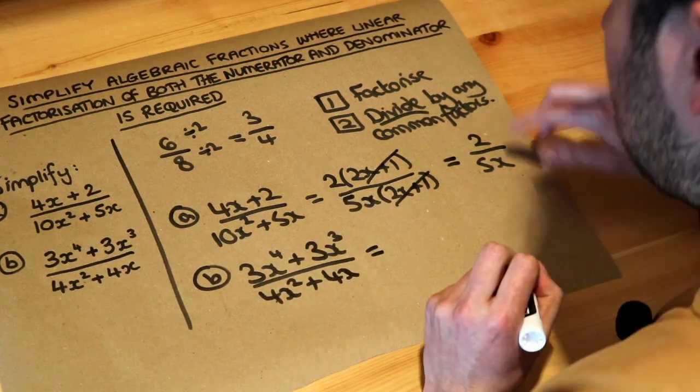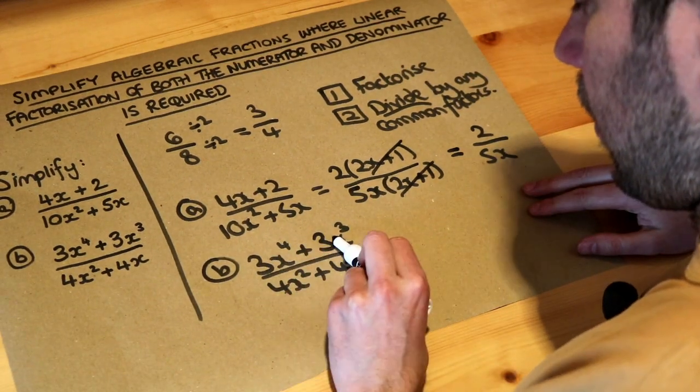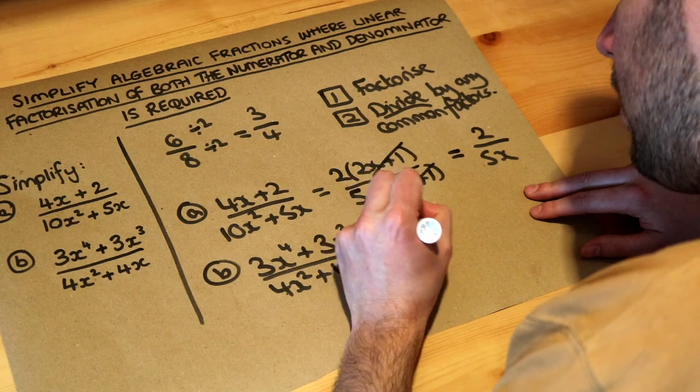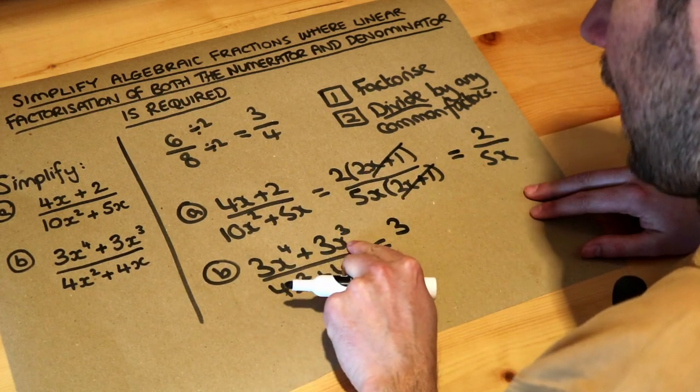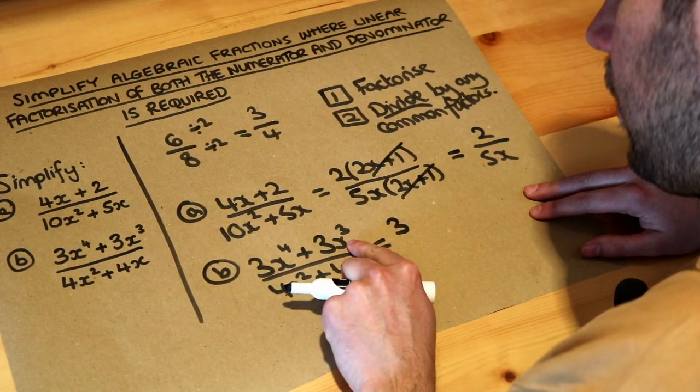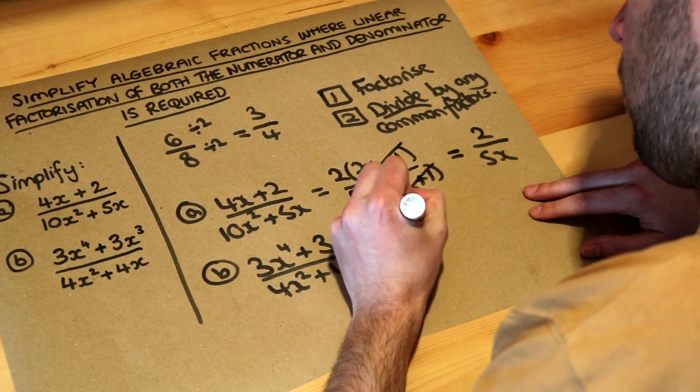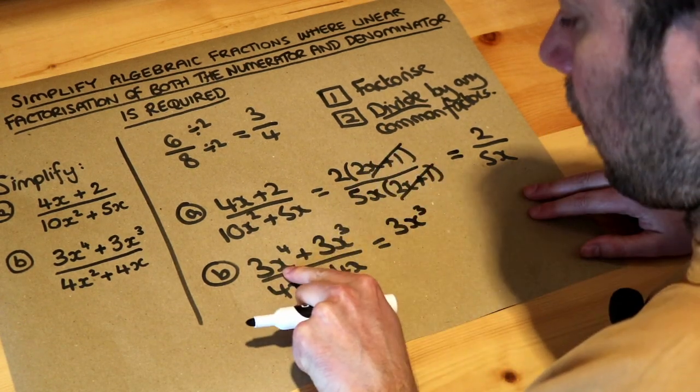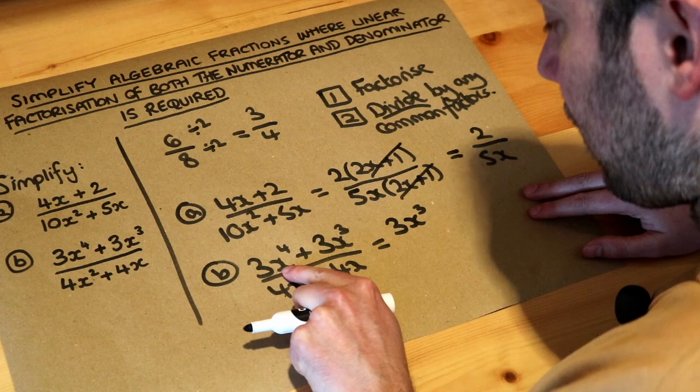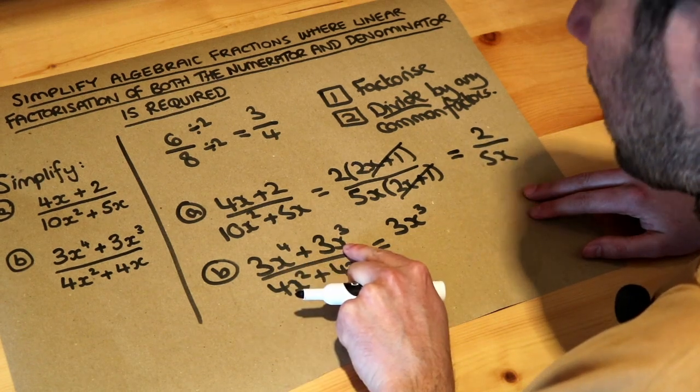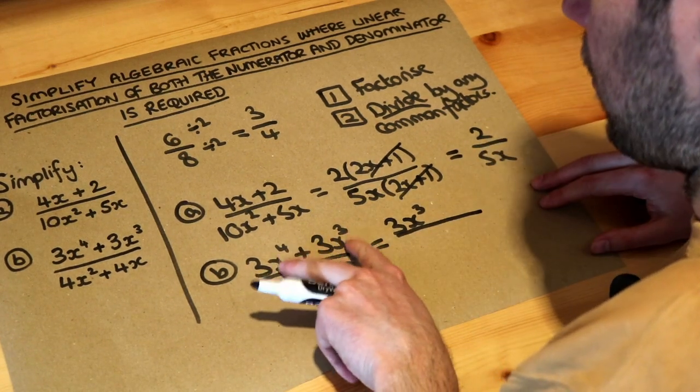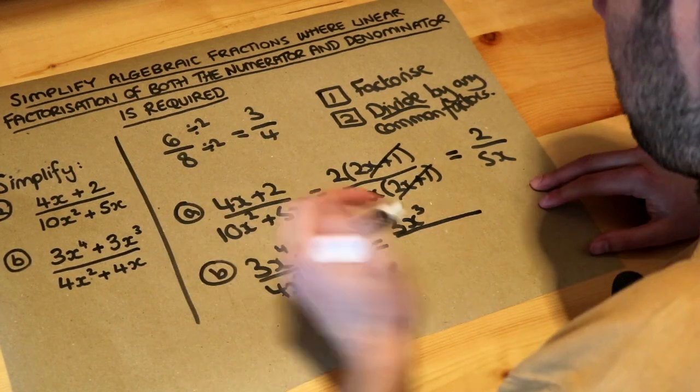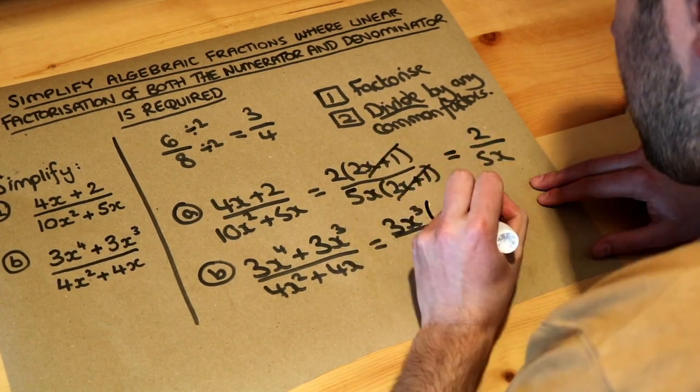And the second one, well let's factorize first. These two terms have a 3 in common. Now x⁴ and x³ have x³ in common, because if you think about it, x⁴ just means x·x·x·x and x³ means x·x·x. They have three factors of x in common, so x³ in common. Then let's think of a bracket.